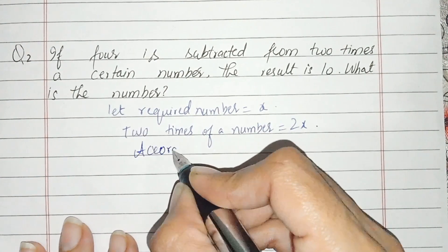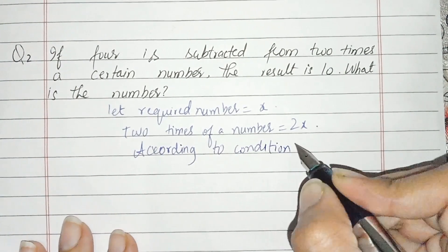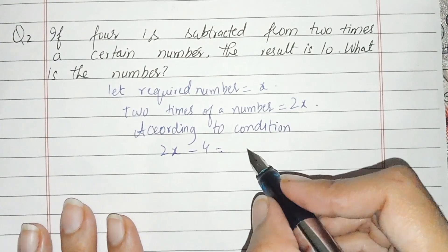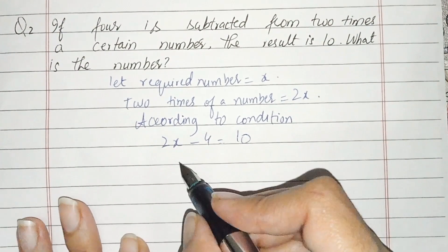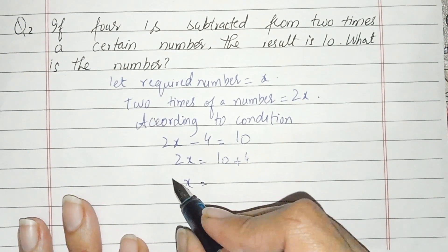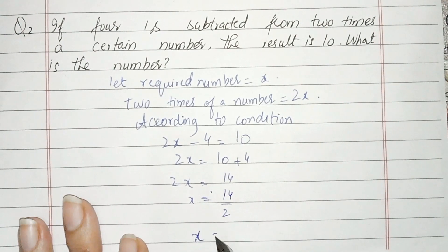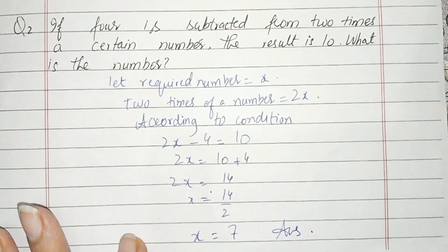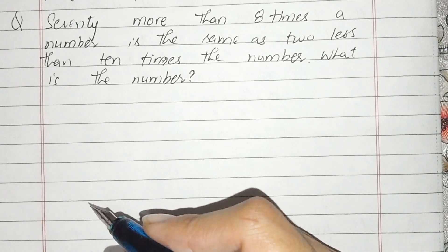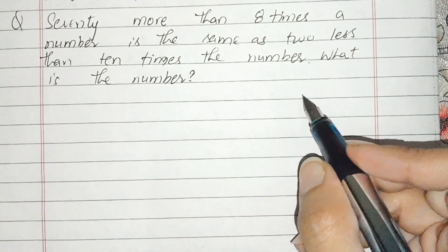We set up the equation: 2x minus 4 equals 10. Solving this linear equation gives us the required number.